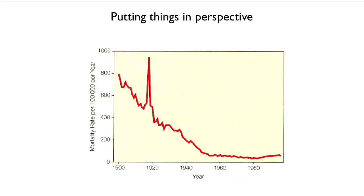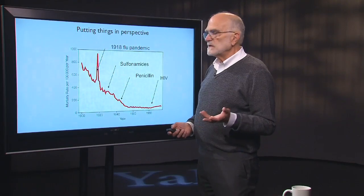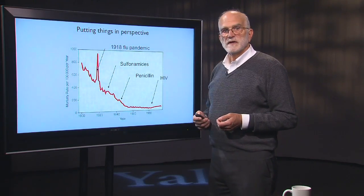Here on the x-axis, we have time running from 1900 to about 1990. Here we have the mortality rate per 100,000 people per year. This big spike here is the 1918 flu epidemic — this is in the United States. Sulfonamides came in about here, and penicillin came in about here. Down here we have a little uptick due to HIV. So when we look at it in this perspective, we can see that in fact most of the reduction in the mortality rate had already occurred before the introduction of antibiotics.